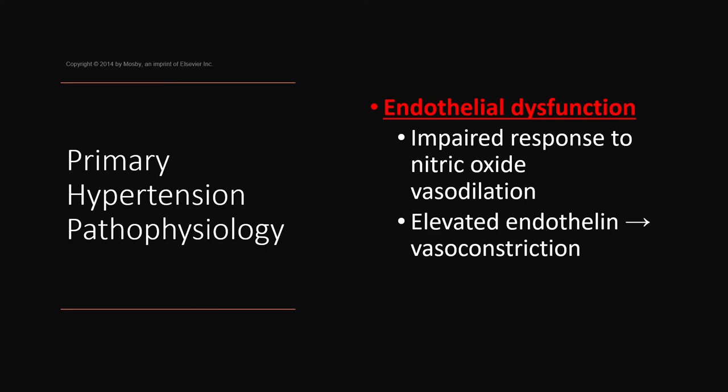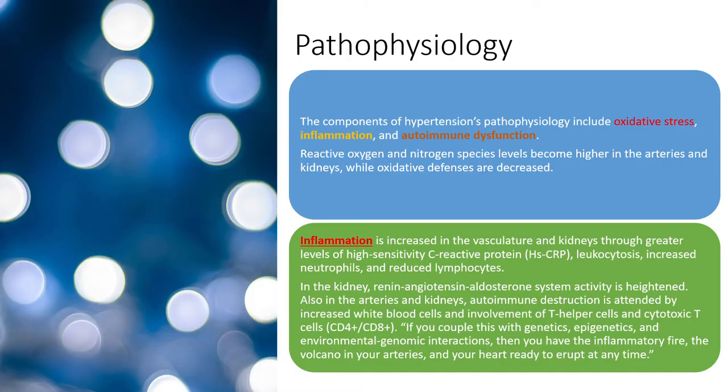Oxidative stress and free radicals impair the bioavailability of nitric oxide. When there's chronic oxidative stress at the cellular level, the body can't produce the vasodilating agent nitric oxide. This leads to cellular dysfunction, imbalance of vasodilation and vasoconstriction mechanisms, and decreases the flexibility of the arterial wall — which is where the pressure and tension of hypertension are working. The arterial wall can no longer properly vasodilate or vasoconstrict.